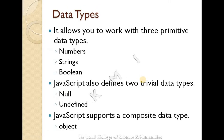Next is data types. We will go to data types — we can define any type of data. JavaScript has several data types: Numbers, String, Boolean, Null, Undefined, and Objects.